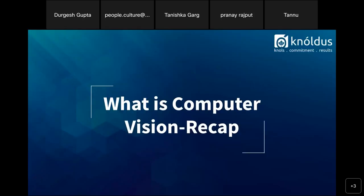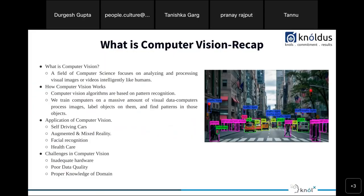Computer vision is a field of artificial intelligence that enables computers and systems to derive meaningful information from digital images, videos, and other visual inputs. The concept is based on teaching computers to process an image at a pixel level. Computer vision is all about pattern recognition. To train computers, we feed them with millions of images and, using algorithms, the computer hunts down those patterns.